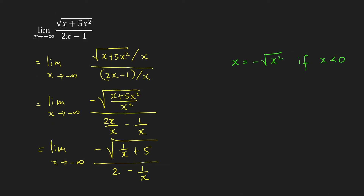And now the limit is clear. 1 over x goes to 0, and 1 over x goes to 0. So the limit is just equal to negative square root of 5 over 2.